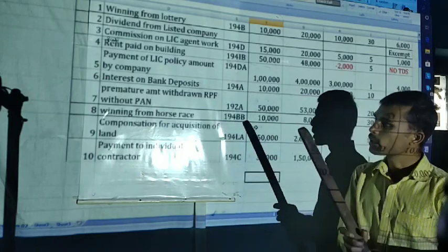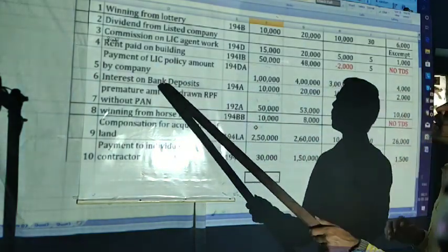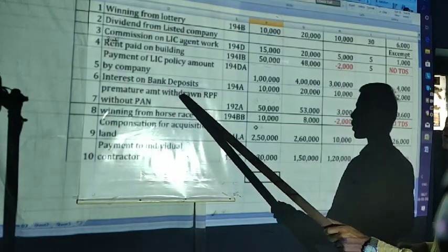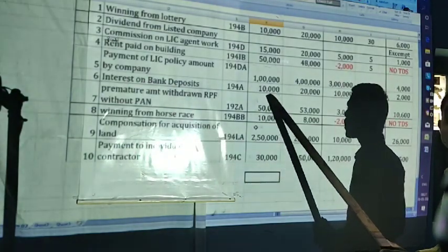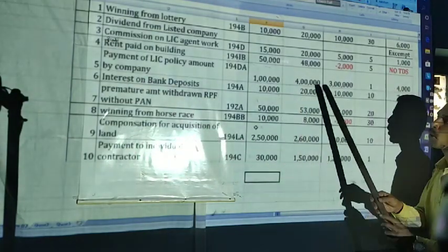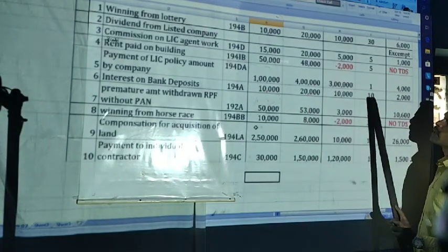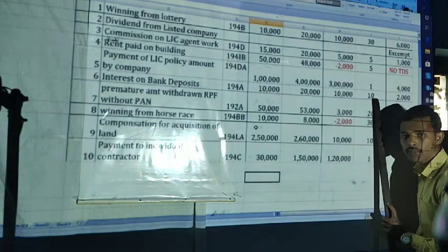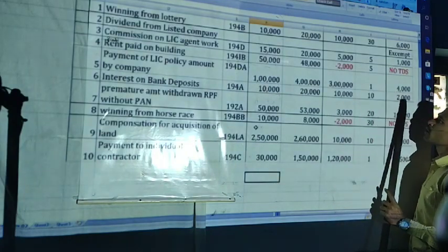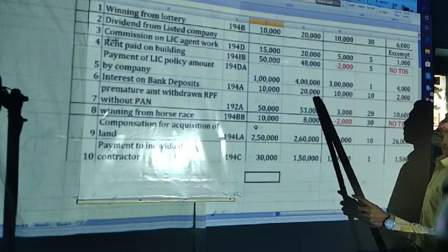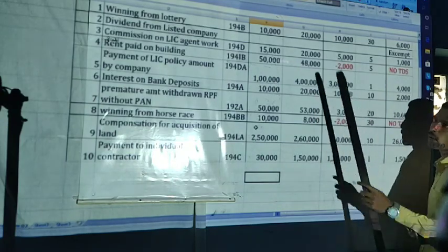Interest on bank deposit under section 194A. Up to 10,000 — no TDS. Here the amount is 20,000. On 20,000, 10% — remember, in case there is no PAN, 20%. So 20,000 into 10% — 2,000 will be the TDS.